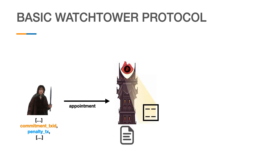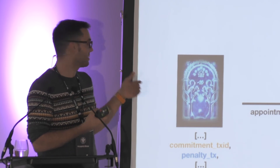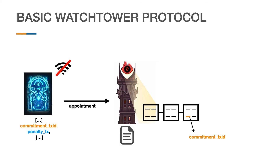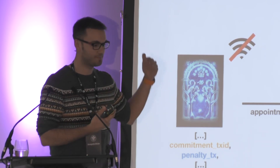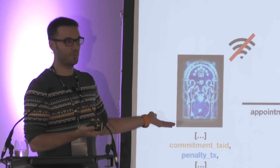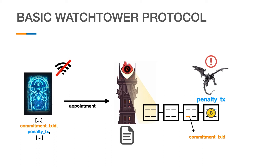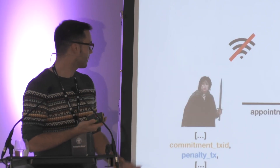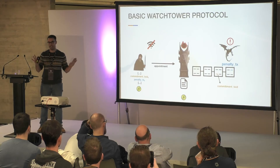The watch tower gets this information, checks it, and stores it. At some point the watcher starts watching the network, and Frodo may go offline — let's say he enters the Mines of Moria, there's awful service inside the mine so he's not online. But the watch tower is still watching, and at some point there's going to be a breach in the channel which the watch tower detects. It sends a penalty transaction to the network, hopefully saves the day, and when Frodo comes back the watch tower can be paid and Frodo can recover the money he was about to lose.